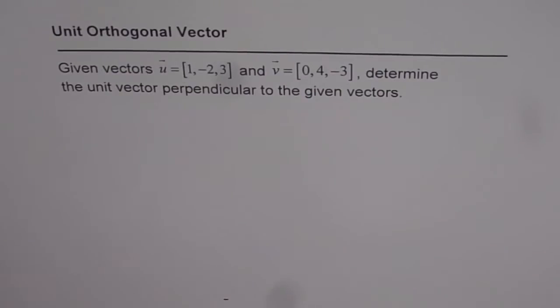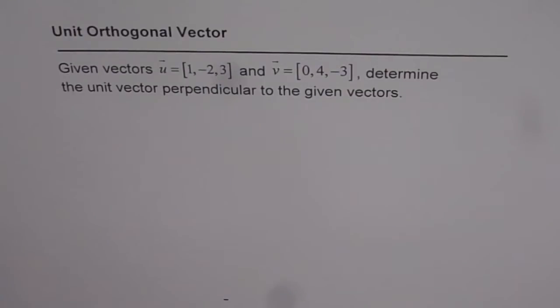Unit orthogonal vectors. Given vector u equals 1, minus 2, 3 and v equals 0, 4, minus 3, determine the unit vector perpendicular to the given vectors.